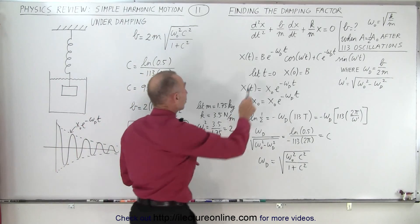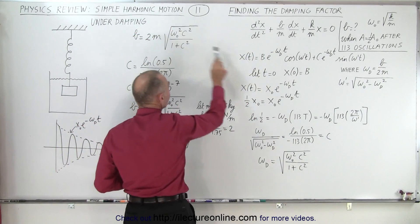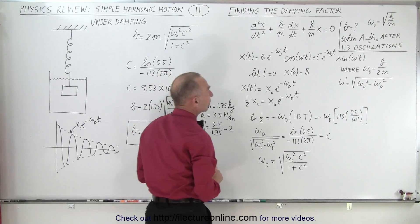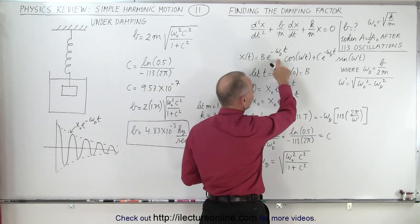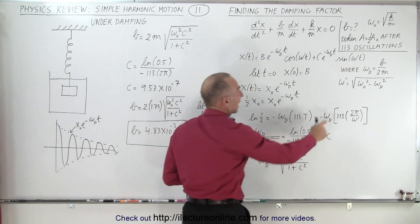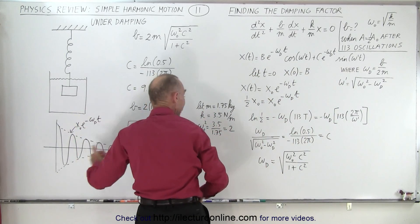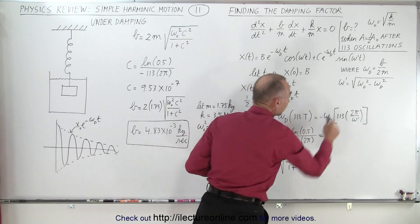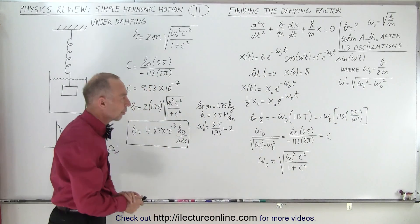The solution to the differential equation when we have underdamping is this. And notice that we have the definition of omega sub d, that's the damping omega, b over 2m. And then we have the new angular frequency of oscillation because of the damping factor, which can be calculated like this. We've reviewed that before.